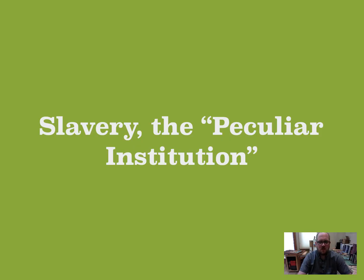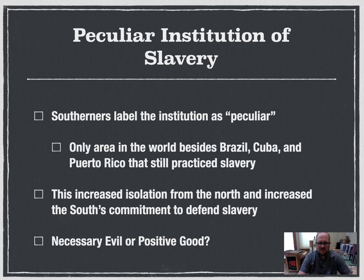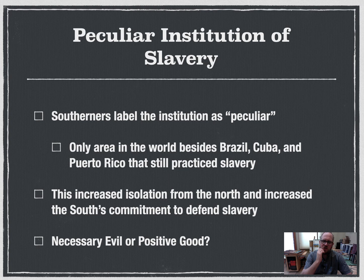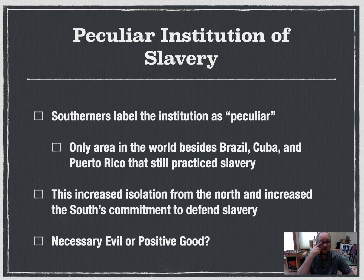Slavery as the 'peculiar institution' — peculiar meaning strange, weird, or different in a special way. It was called peculiar because it was different than other countries. America was essentially the only European-style nation that had not freed its slaves; all other European countries had basically banned slavery. Only really three major countries in the world still had slaves: Brazil, Cuba, and Puerto Rico.